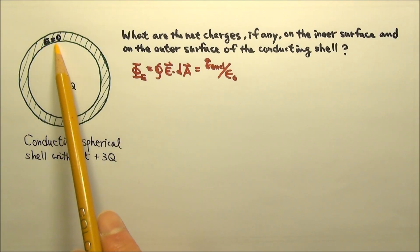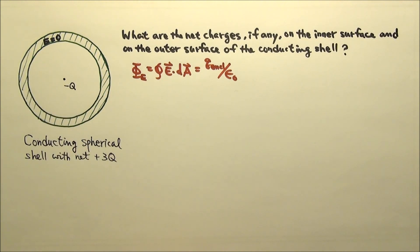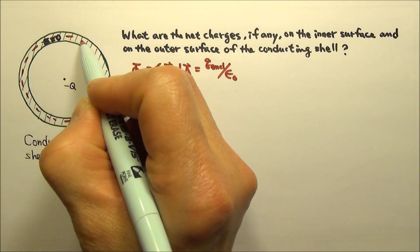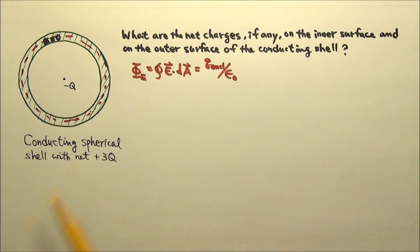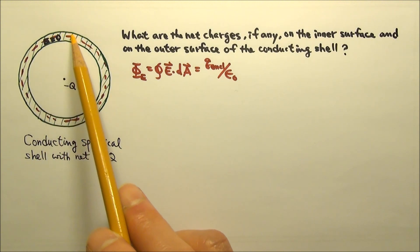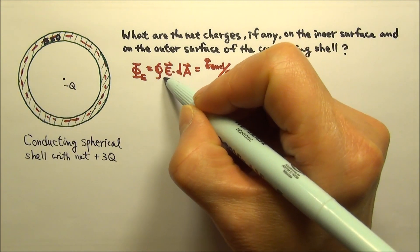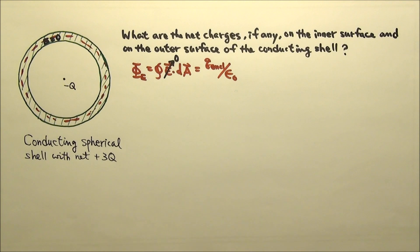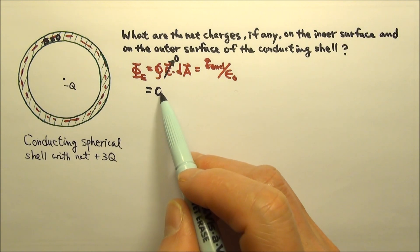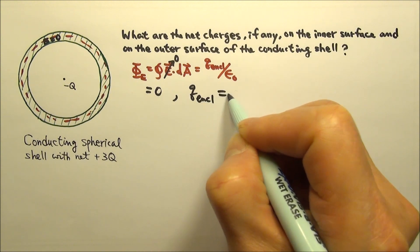We know the electric field is zero everywhere inside this conducting shell, so we can make a Gaussian surface that is completely inside this conductor. Now let's find the flux through this Gaussian surface. Since everywhere on this Gaussian surface the electric field is zero, we're integrating zero over the entire Gaussian surface. Adding up zeros will give us zero. Since zero equals q enclosed over epsilon naught, that means the q enclosed must also be zero.